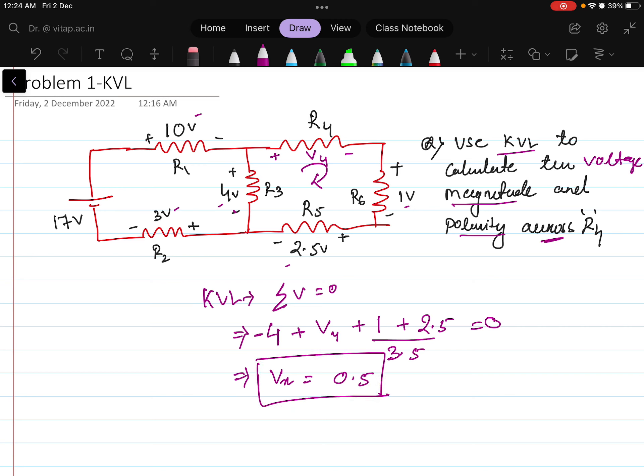Then what is the polarity? Polarity means which one is the positive side, which one is the negative side. As you have considered this as positive and other side as the negative, we are getting the same value here as positive value. We can say the voltage value here is 0.5 volt across this R4 resistance.